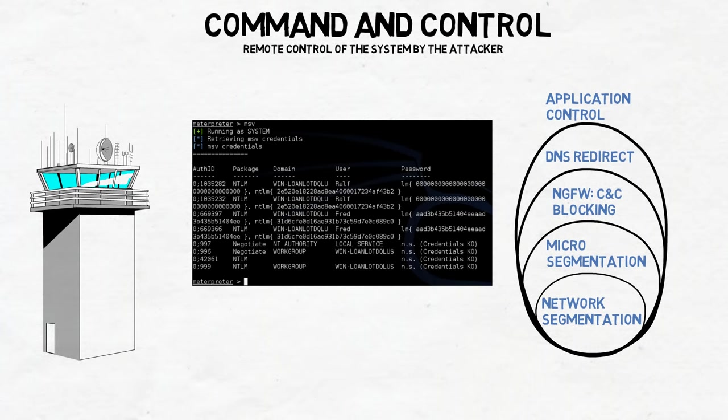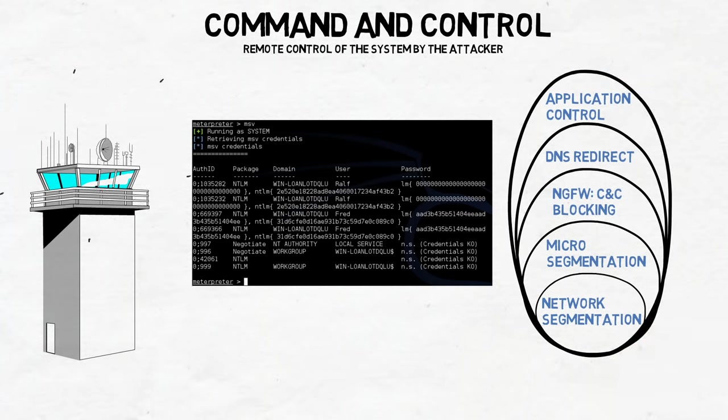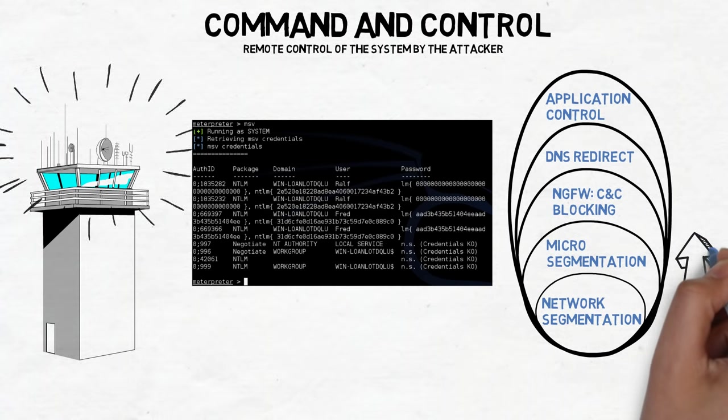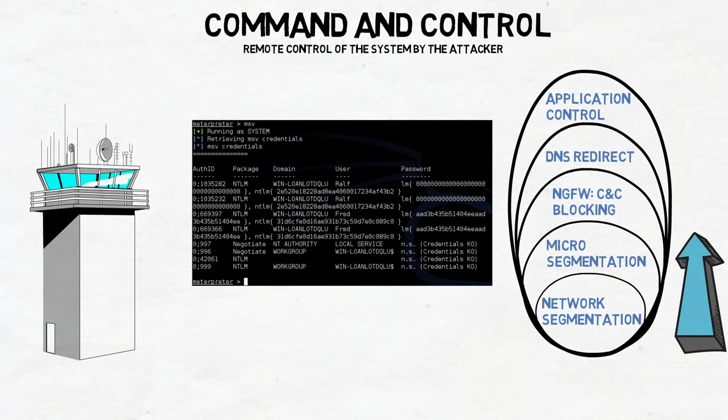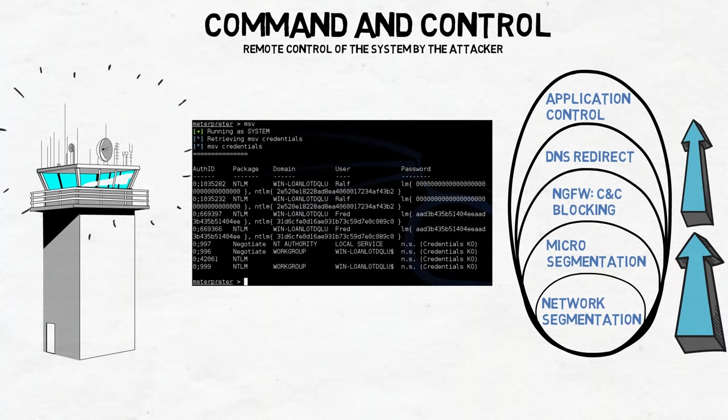While on the topic of next-generation firewalls, make sure you're using Layer 7 application control to block commonly known remote access tools like Telnet, SSH, Netcat, PowerShell, RDP, and various other protocols that really have no business leaving your network. If you do have a business case for using these tools, try to lock it down to specific IP addresses.